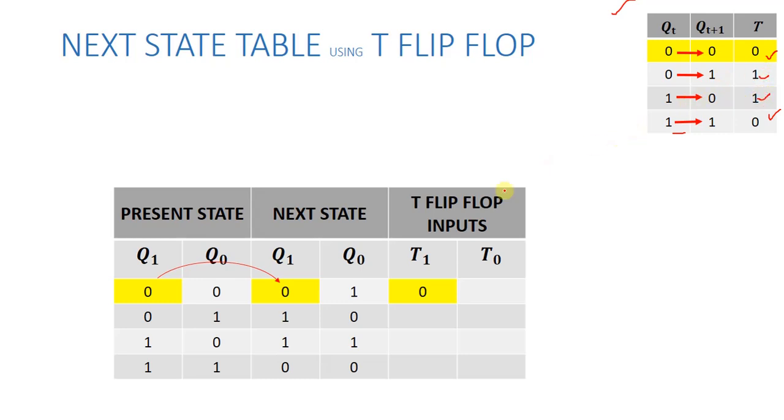When we want to do 2-bit counter design, we will need 2 flip-flops. This will be our flip-flop. This will be our second flip-flop. We give T0 and T1. Now, let's see here. First, let's solve T1.